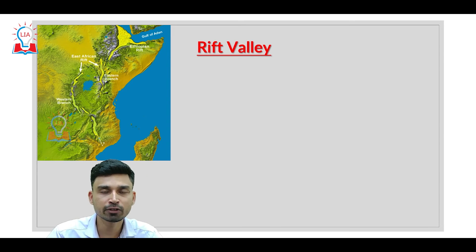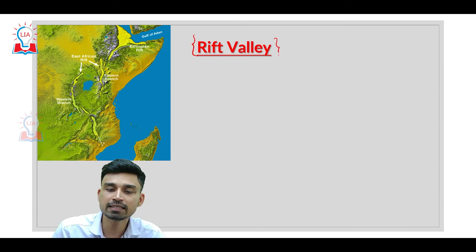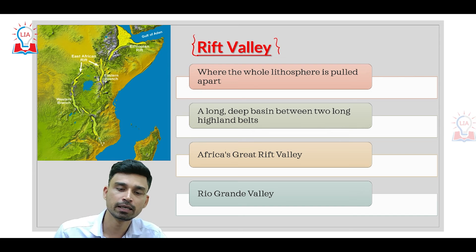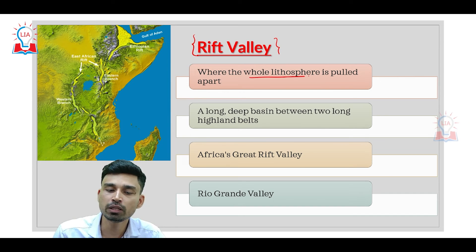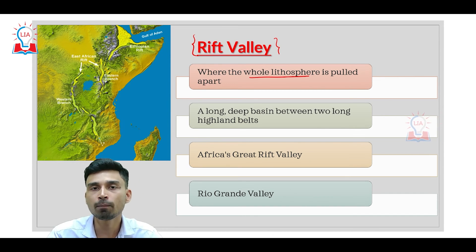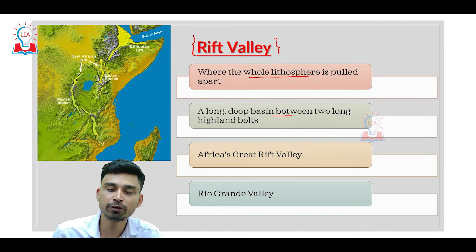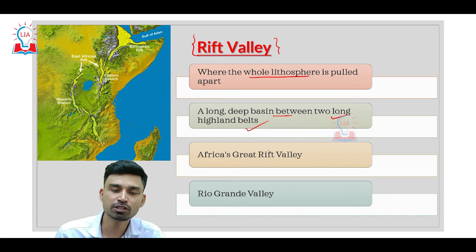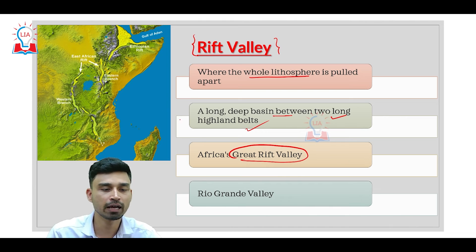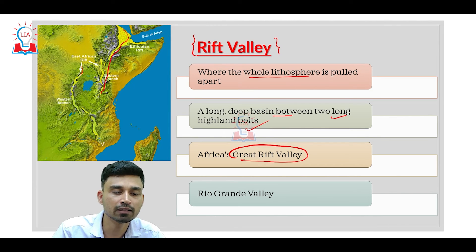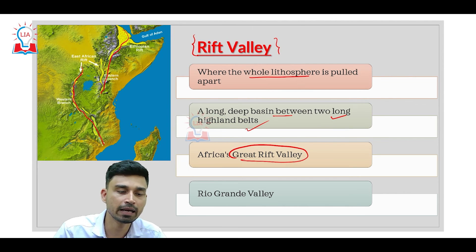Next in the series of tectonic landforms is the Rift Valley, the most important landform that develops due to tectonic plate disturbance. A Rift Valley basically develops in areas where the whole lithosphere is being pulled apart due to the opposite flow of convection currents below it. This creates a long, deep basin between two long highland belts. The best example is Africa's Great Rift Valley — we have the East African Rift Valley going from the Red Sea to the east and south, and the West African Rift Valley developing in the eastern part of Africa.